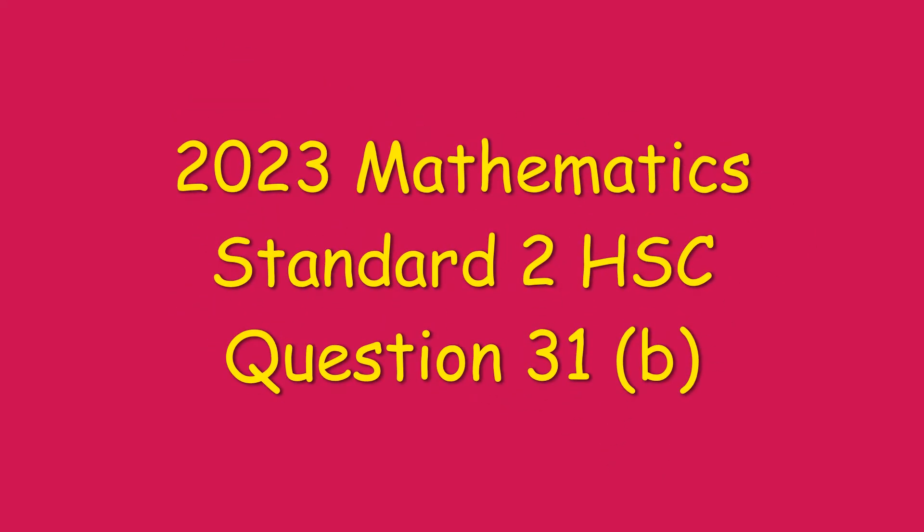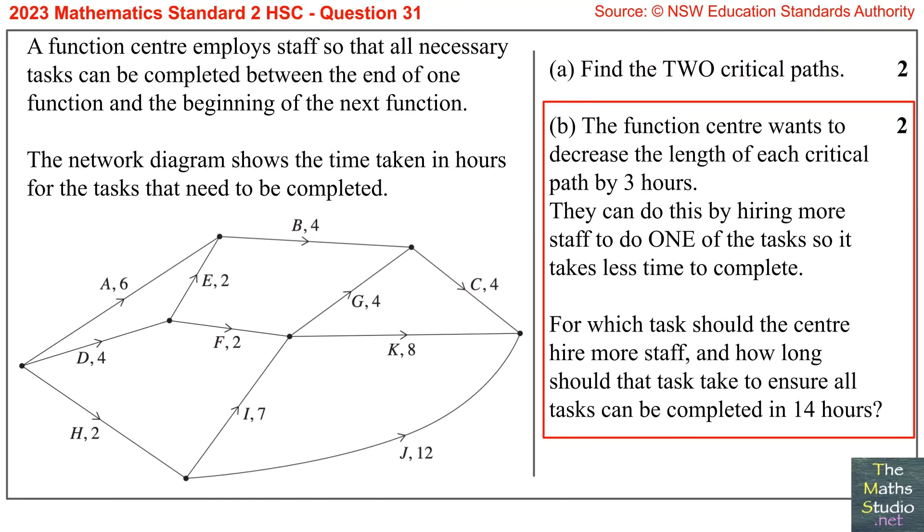Part B. The function center wants to decrease the length of each critical path by three hours. They can do this by hiring more staff to do one of the tasks so that it takes less time to complete. For which tasks should the center hire more staff? And how long should that task take to ensure all tasks can be completed in 14 hours?